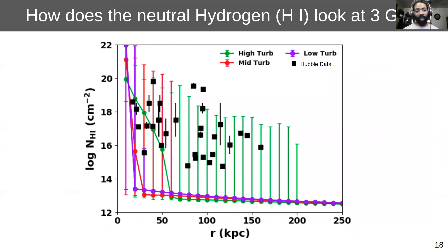So here I just have a comparison of H1 column densities along with impact parameter, and we find that only the high run in green agrees with the Hubble data as black squares, whereas other two runs, the H1 is kind of really constrained to the center.